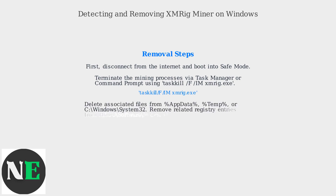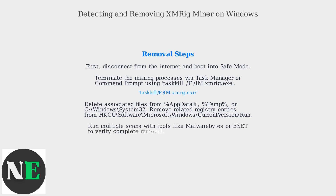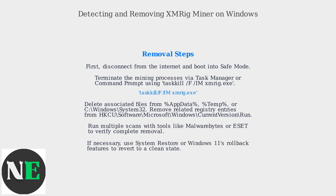Delete associated files from AppData, Temp, or C:\Windows\System32. Remove related registry entries found in HKCU\Software\Microsoft\Windows\CurrentVersion\Run. Run multiple scans with tools like Malwarebytes or ESET to verify complete removal. If necessary, use System Restore or Windows 11's rollback features to revert to a clean state.